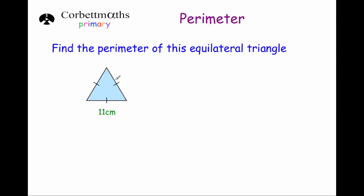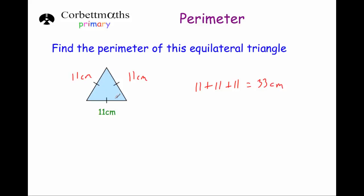This time we've been given an equilateral triangle, which is a triangle where all the sides are the same length. So if the bottom is 11 centimeters, the right hand side and the left hand side are all 11 centimeters. We could do 11 times three to get 33, or 11 plus 11 is 22, plus another 11 is 33 centimeters.